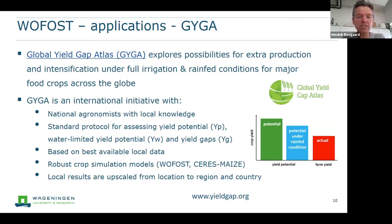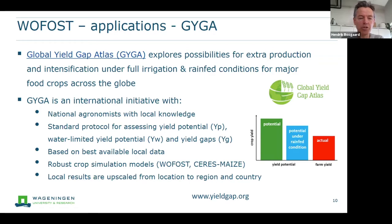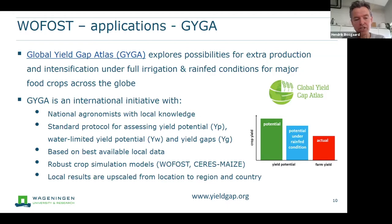Another example is the Global Yield Gap Atlas, where we explore possibilities for extra production and intensification under full irrigation and rainfed conditions for major food crops worldwide. This is important for making investments in agricultural R&D and studying intensification pathways — where in the world can we intensify cropping systems, and where is the difference between actual yields and potential yields? We work with local agronomists and local data as much as possible, following a standard protocol for assessing yield potential, water-limited yield potential, and yield gaps.